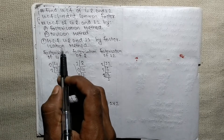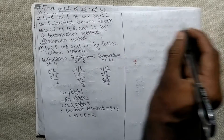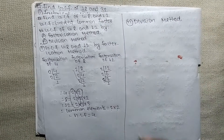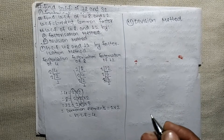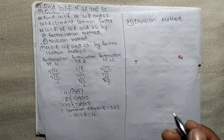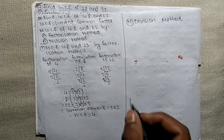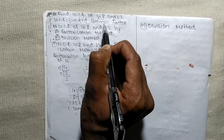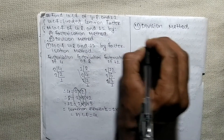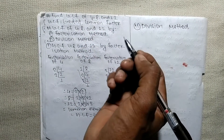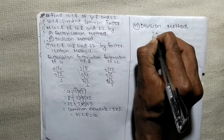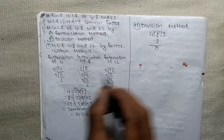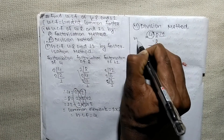Now we learn to find GCF by the division method. While finding GCF by division method, you divide the greater number by the lower number until there is no remainder. Here we have three numbers: 4, 8 and 12. We take the first two numbers: 4 and 8. Since 8 is greater, we divide 8 by 4 — that gives 4 × 2 = 8, so there is no remainder. Since 4 leaves no remainder, it becomes the GCF so far.